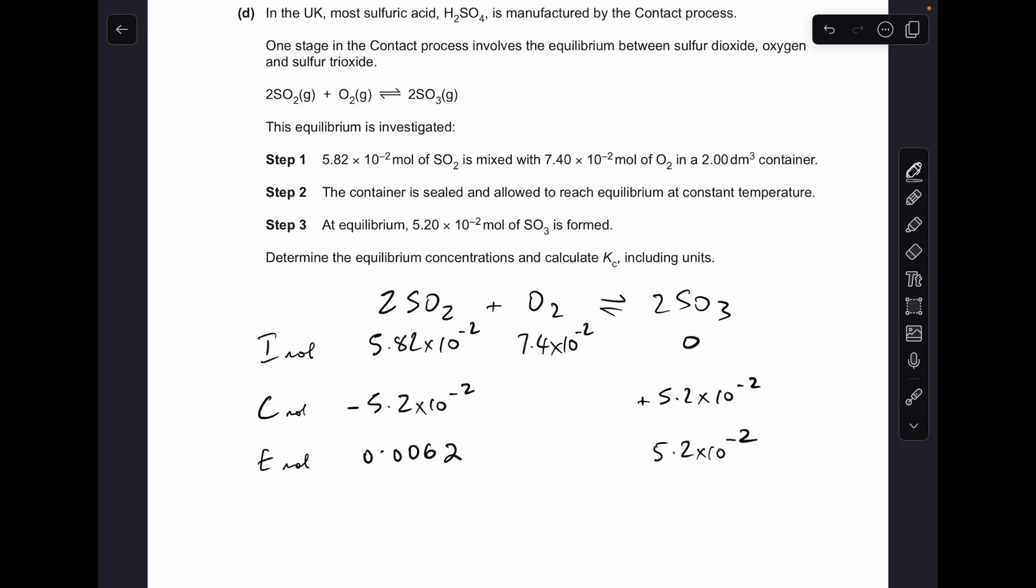And the oxygen is going to go down by half that amount because of the 1 to 2 ratio between the O2 and the SO3. So at equilibrium there would be 0.048 moles of oxygen.